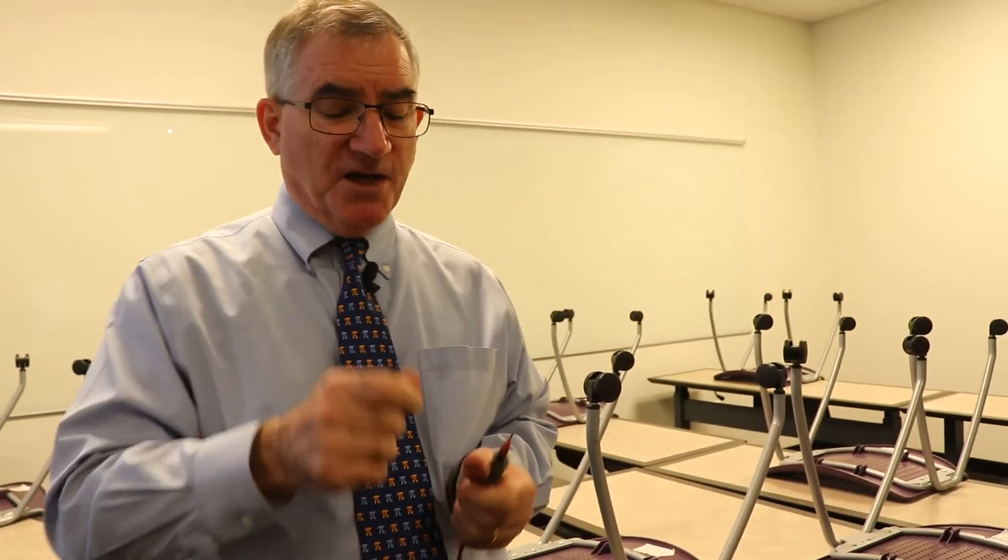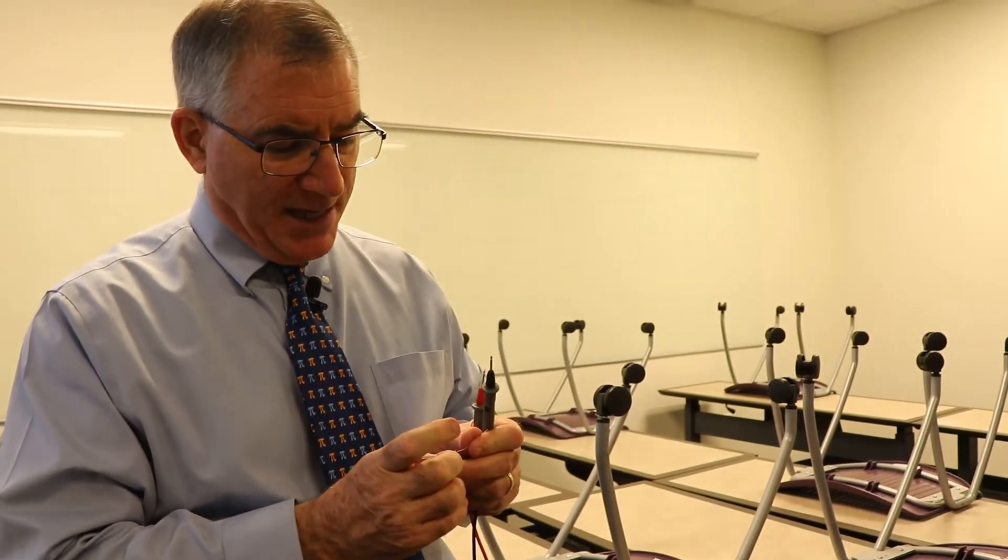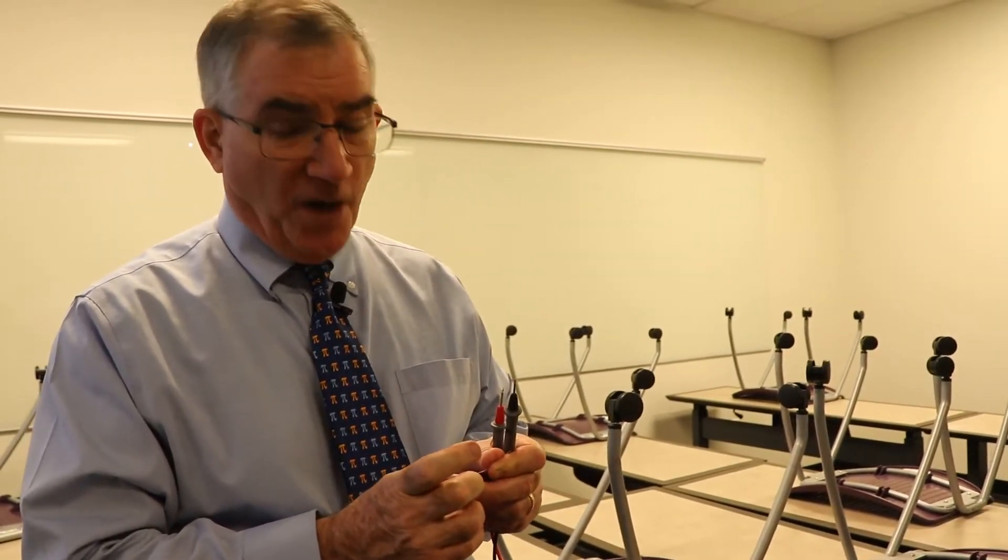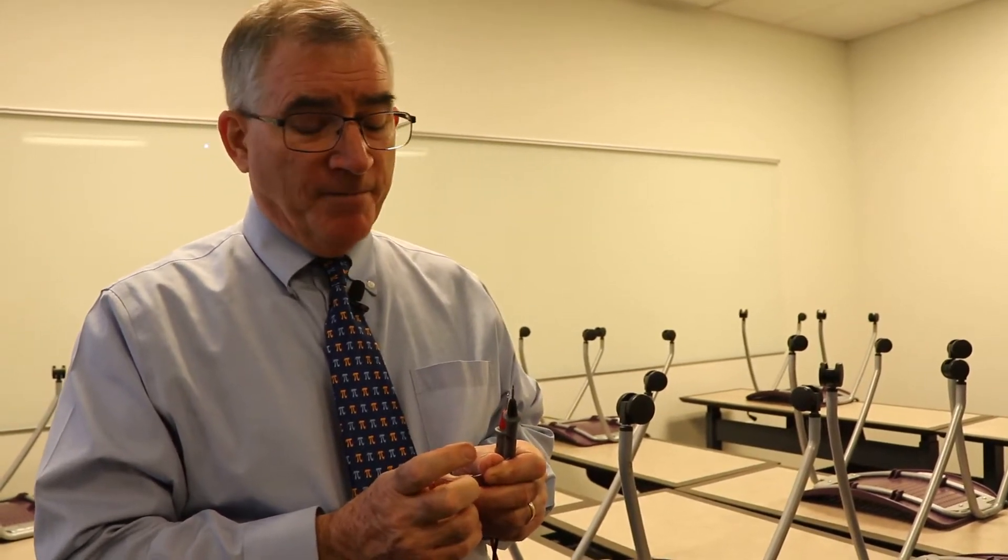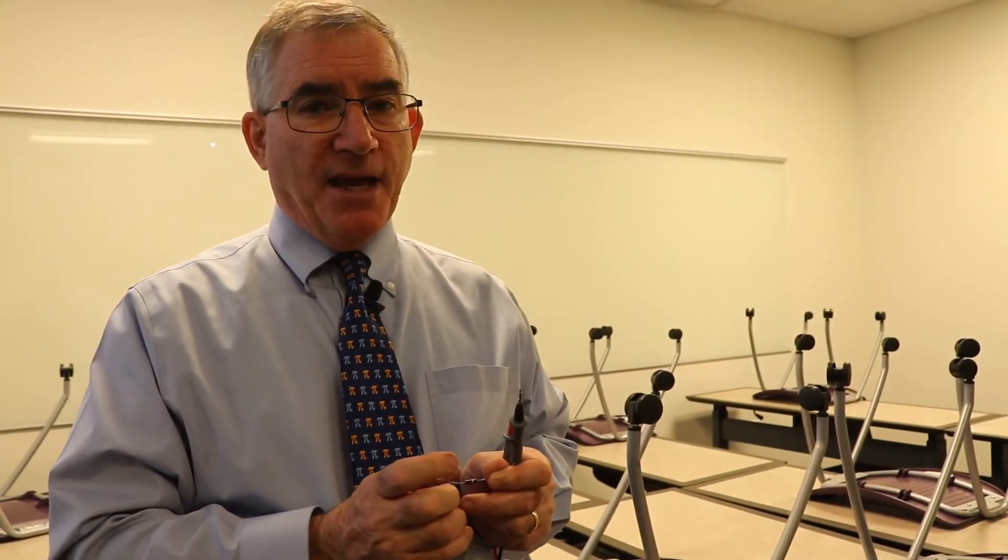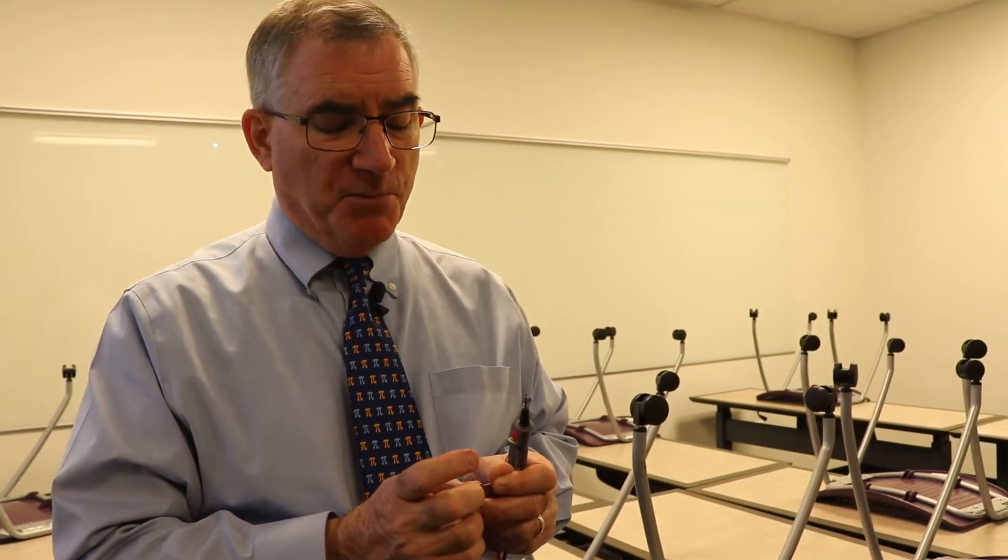This particular resistor here, I know it's four significant figures. But if I went with the bands, this would be one for brown. Red is two. So it'd be 12. And then the third band is the power of 10. So this would be 100, 10 squared, 10 to the 2 power.